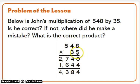5 times 5 is 25, but plus 2 is 27. So good job putting the 27 there.